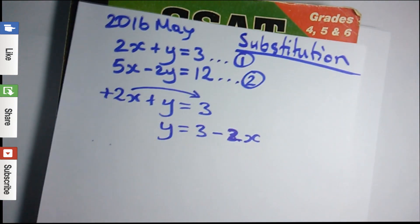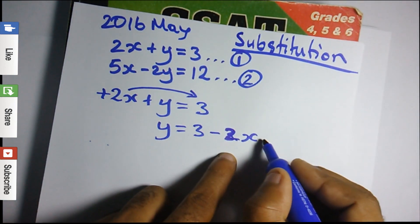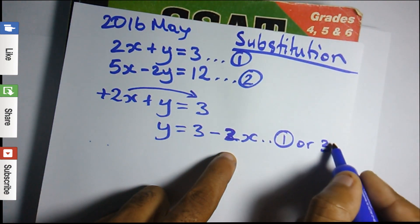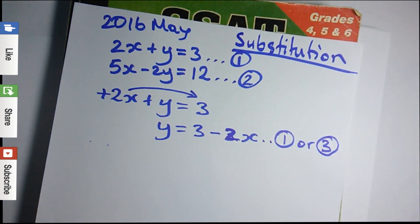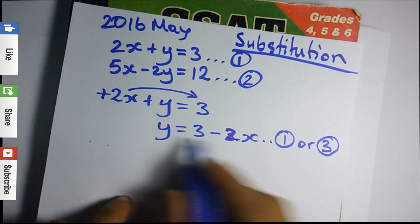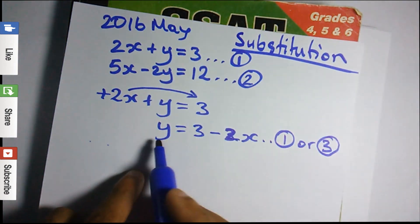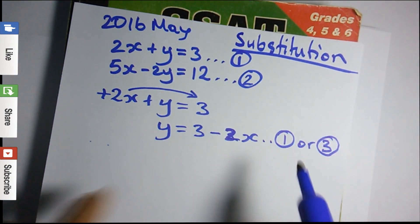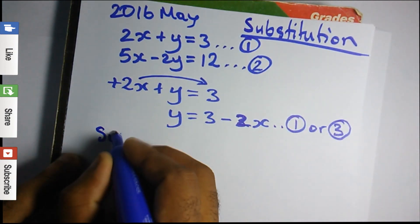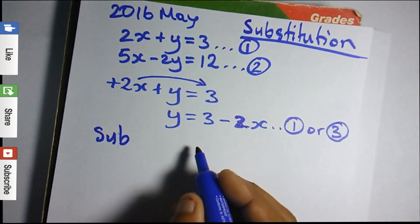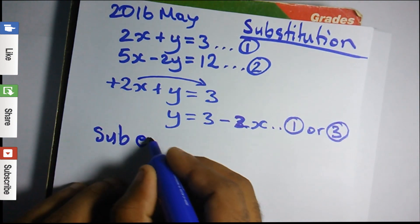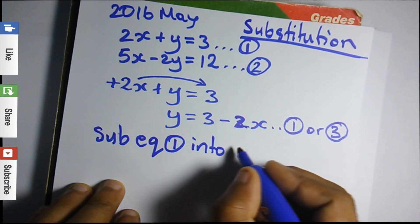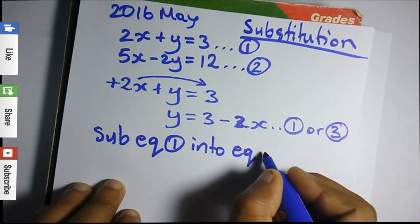Now, this equation — it's still equation 1, or we could rename it as equation 3. Remember, this equation that we rearranged is still equation 1, or we could name it equation 3. Now, we are going to substitute — sub is short for substitute — we're going to sub equation 1 into equation 2.